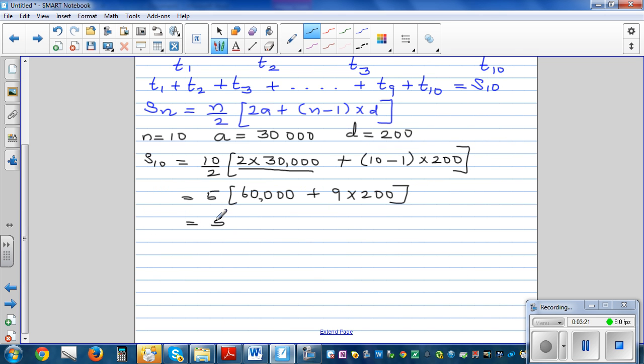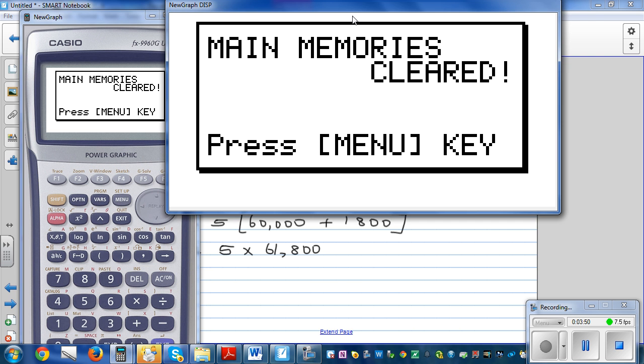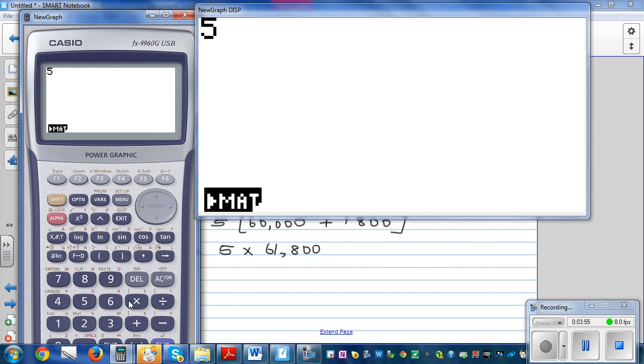Okay, so let's try to simplify this a bit further. So this is 5, bracket, 60,000 plus 1,800. And so this is basically 5 times 61,800. 60,000 plus 1,000 is 61,000 and then 800.